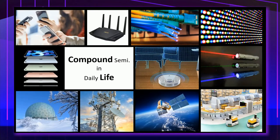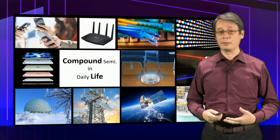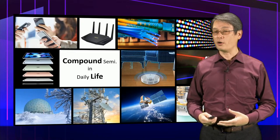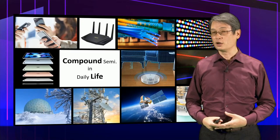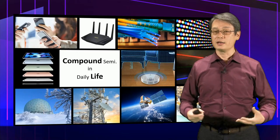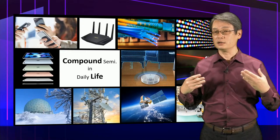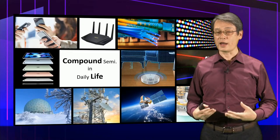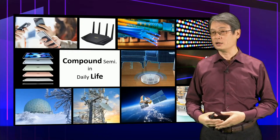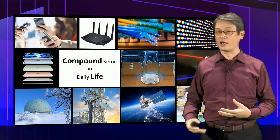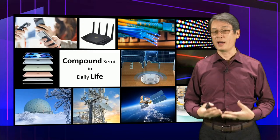Compound semiconductors are around us in daily life. For example, in smartphones, compound semiconductors are inside as the power amplifier to transmit fast and complicated signals to the base station. Wi-Fi routers also have compound semiconductor parts. Inside optical fibers, compound semiconductors act as the light-emitting source and interface IC. In displays, compound semiconductors act as the backlighting. And compound semiconductors are also found in satellite base stations and radar.